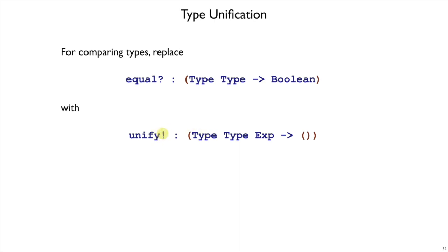You'll notice that unify has an exclamation mark in its name. That's because the process of checking whether these two types are consistent may involve assigning a type variable to another type for use in further unification.